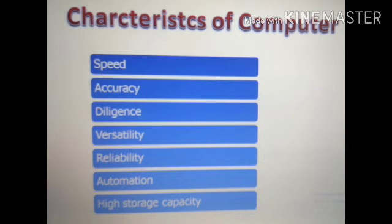Next characteristic is reliability. A computer is reliable as it gives consistent results for similar sets of data. Next is automation: some computers can perform tasks automatically without manual intervention. And last is high storage capacity. A computer can store huge data; it does not need huge space to store that.